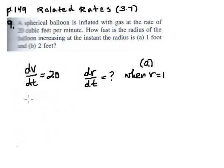First we need some sort of equation that relates volume and radius. That is given by the formula for the volume of a sphere. The volume of a sphere is 4/3 π r³.